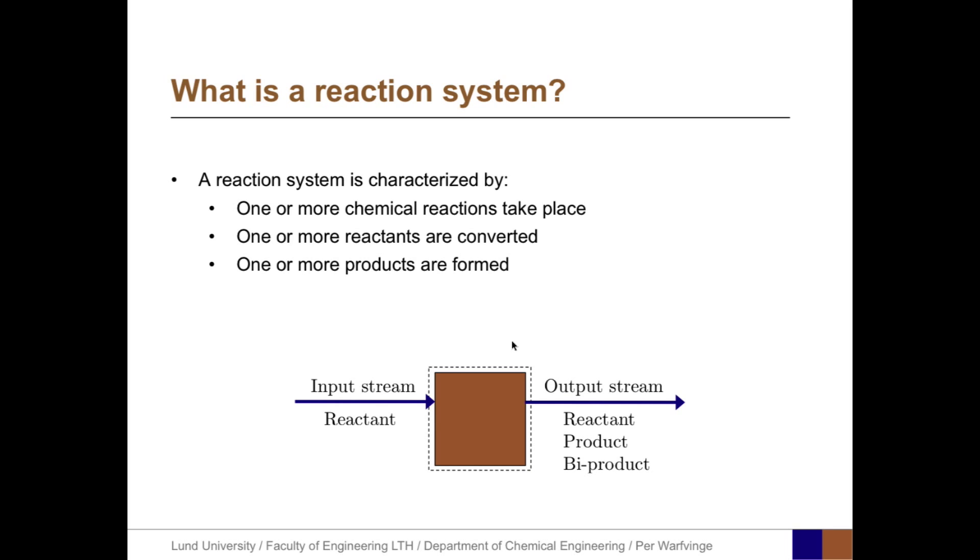This can be shown like this. There is at least one input stream with at least one reactant. There is at least one output stream, normally with one or more reactants, but also a product, and possibly also a byproduct.